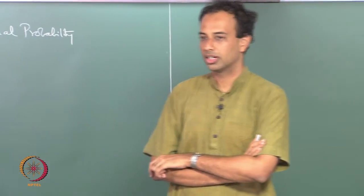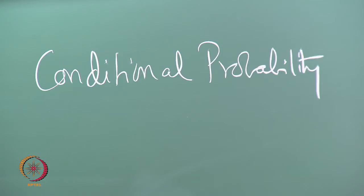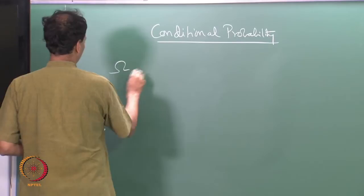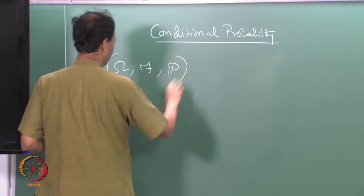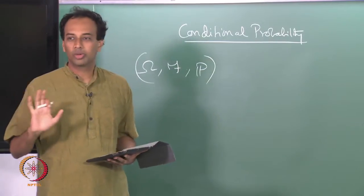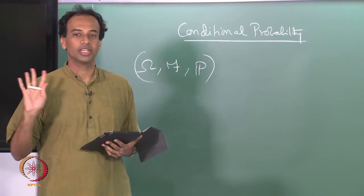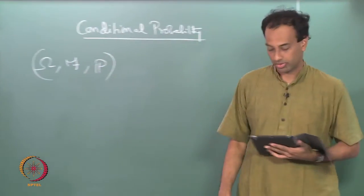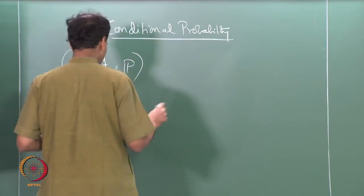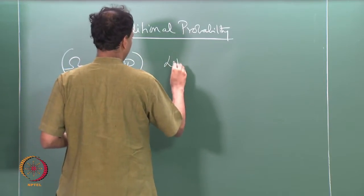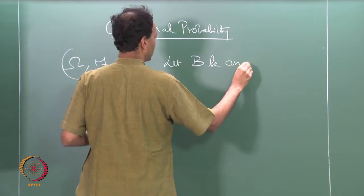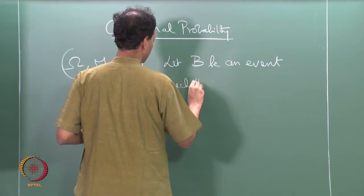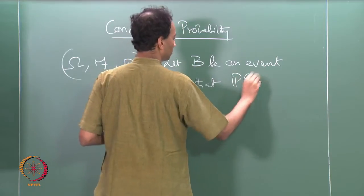Now we begin a new section focused on conditional probability. So, we have a probability space omega F P. Now that we know probability spaces, everything we do will start with an omega F P — we have a sample space, a sigma algebra on the sample space, and some probability measure P on omega F. Let B be an event such that P(B) is greater than 0.